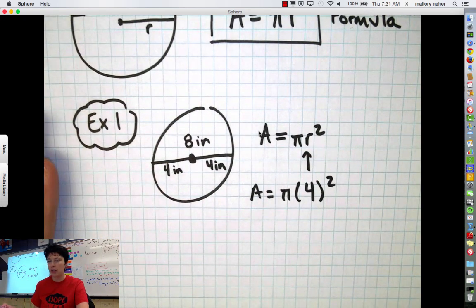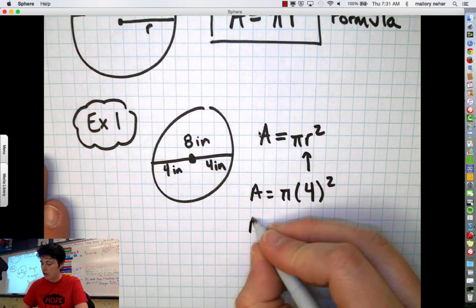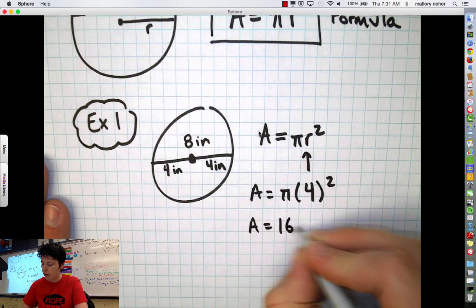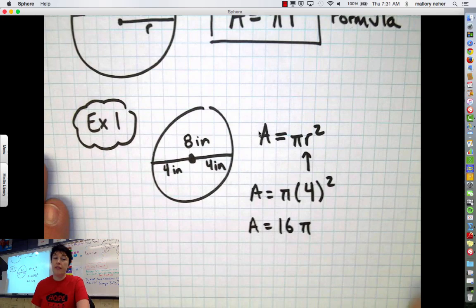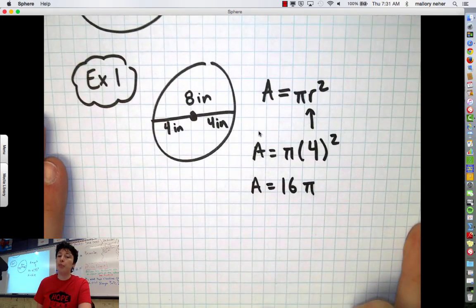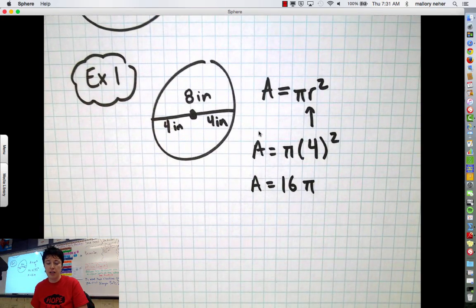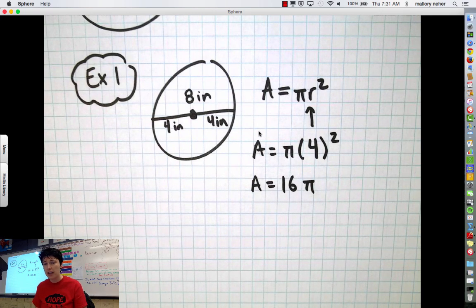Now 4 squared, remember what that means. That's 4 times 4. That would be 16. So area is equal to 16 pi. And if I didn't have a calculator I would probably stop right here and say 16 pi is my answer because I can't really do much past that.